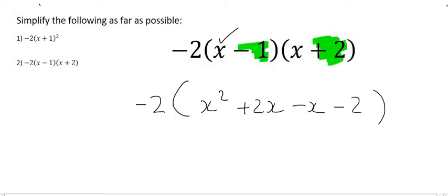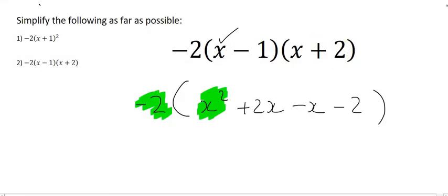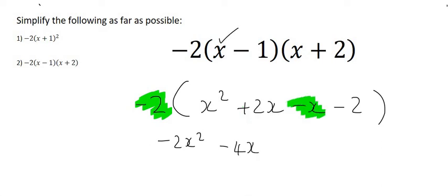Now in the next step we will multiply this minus 2 into each part. So minus 2 times by x squared is negative 2x squared. Minus 2 times by positive 2x is negative 4x. Minus 2 times by minus x is going to give us positive 2x. And lastly minus 2 times minus 2 is going to give us positive 4.